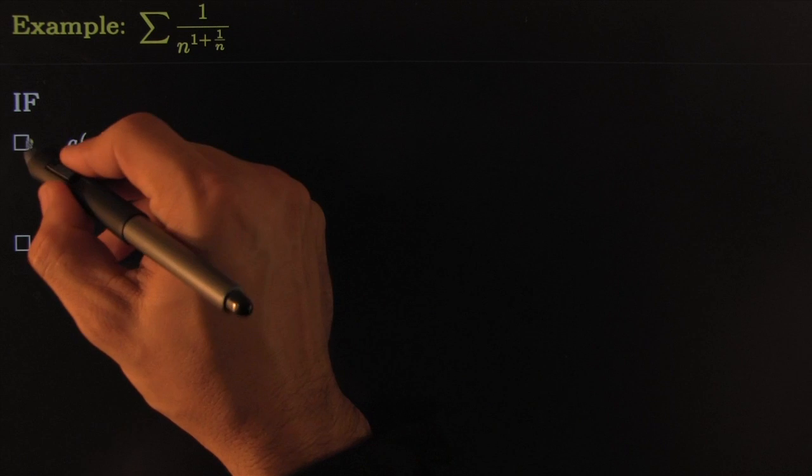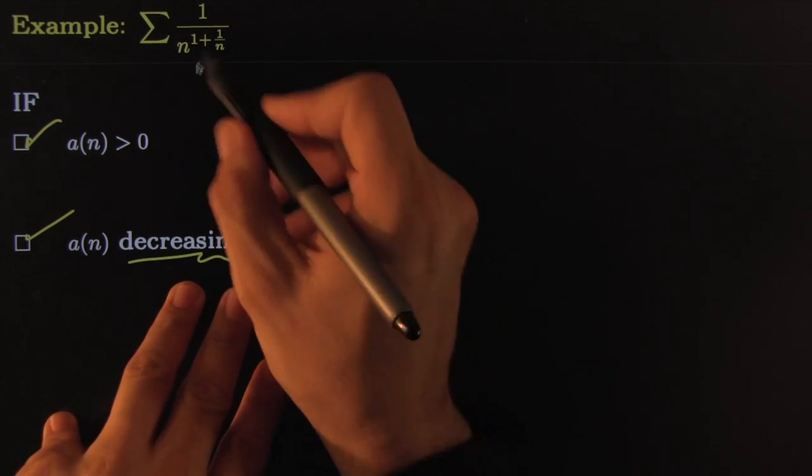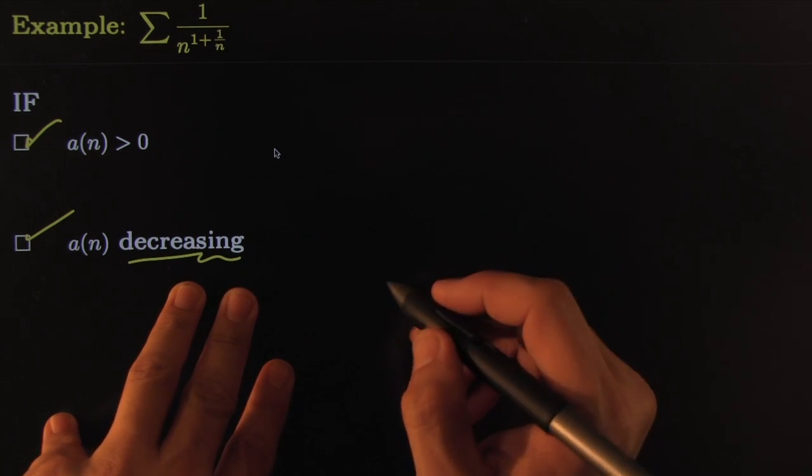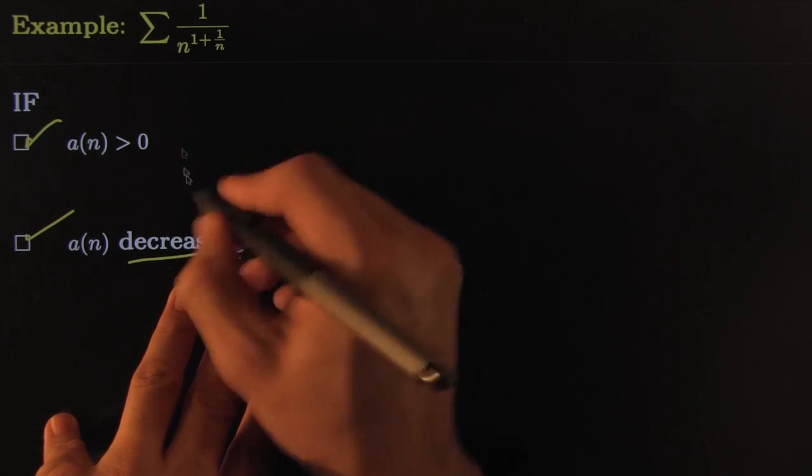They're all positive and decreasing. This one might take a little bit of work to show, but you can do it. I have faith in you. Take a derivative and make sure that the derivative is negative after some point, showing that eventually it's decreasing. We really only care about the tail.